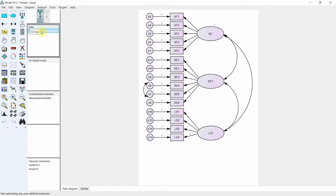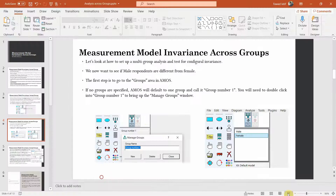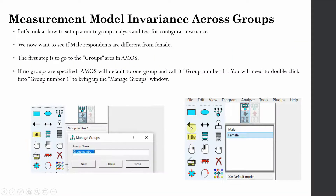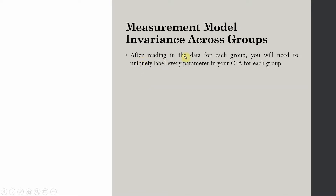Here are your groups with the data now defined in your data file. You just need to make sure that once you define the groups, you select the file name for each group, click the grouping variable, and select the group value for each group. The next step is: after reading in the data for each group, you will need to uniquely label every parameter in your CFA for each group.